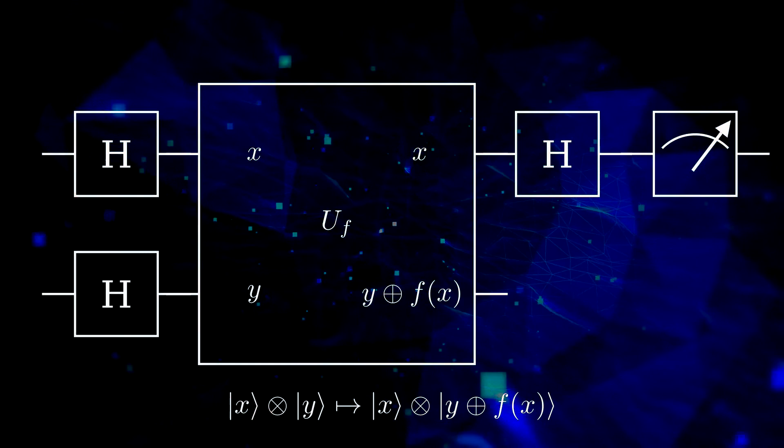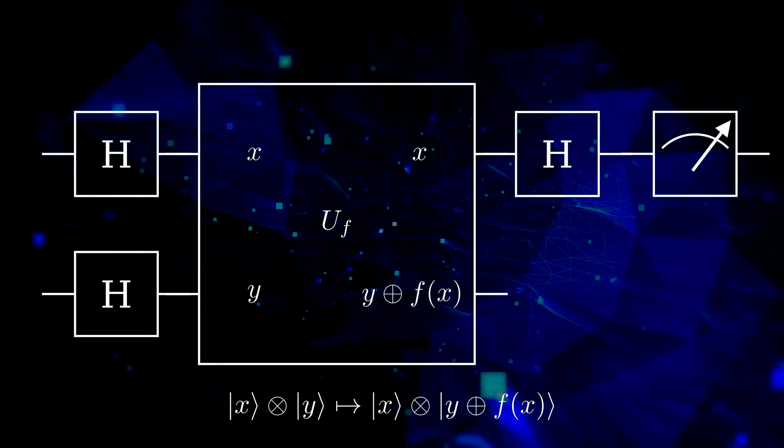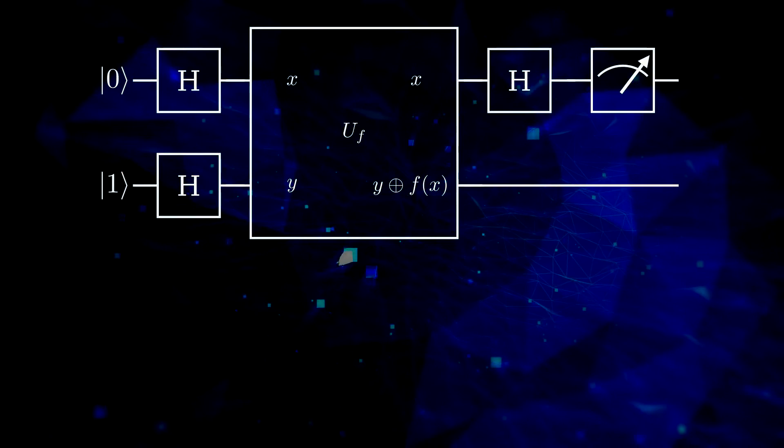Let us go through a circuit. When we apply the zero and one state on the two inputs, first, the common state is described by the tensor product.